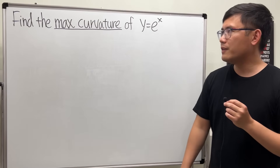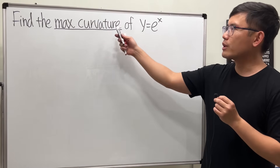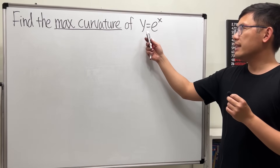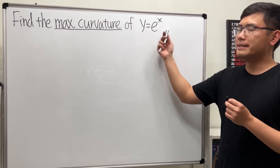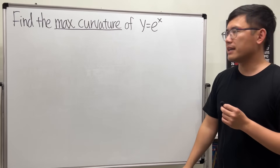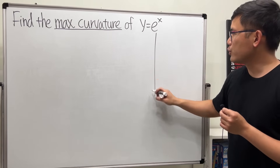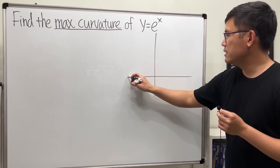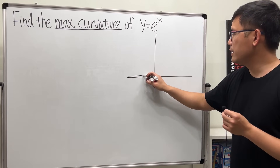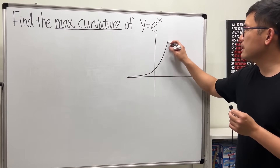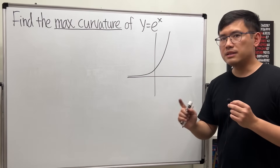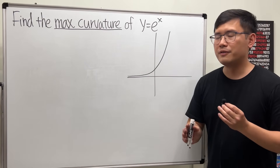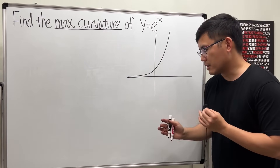Let's talk about how to find the maximum curvature of a function, and let's do it with y is equal to e to the x. Let me give you a picture first. This is how e to the x looks like. Remember, there's a difference between slope versus curvature.